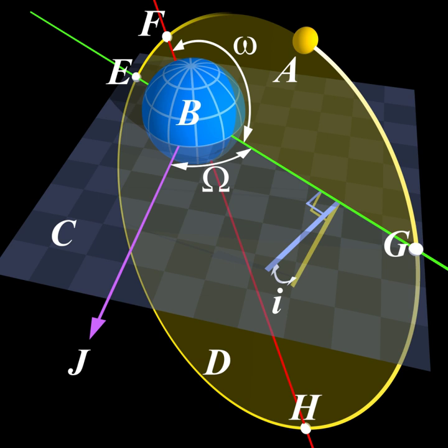In the horizontal coordinate system, used in celestial navigation and satellite dish installation, azimuth is one of the two coordinates. The other is altitude, sometimes called elevation direction above the horizon. See also satellite finder.